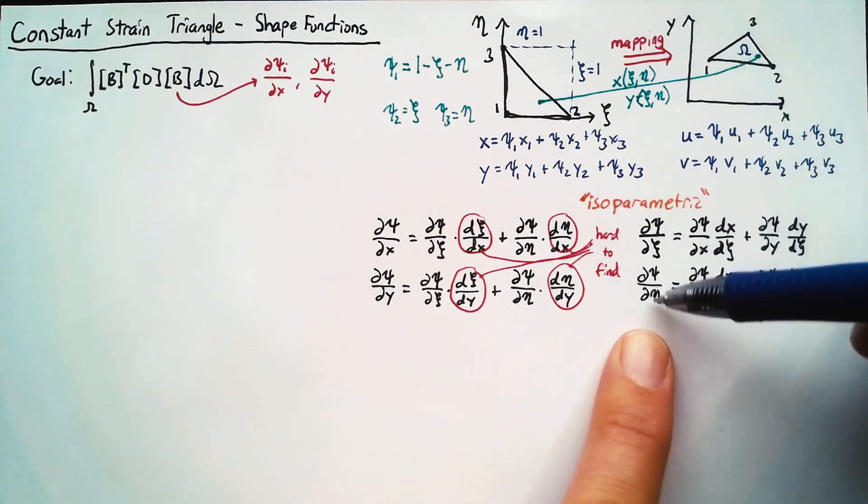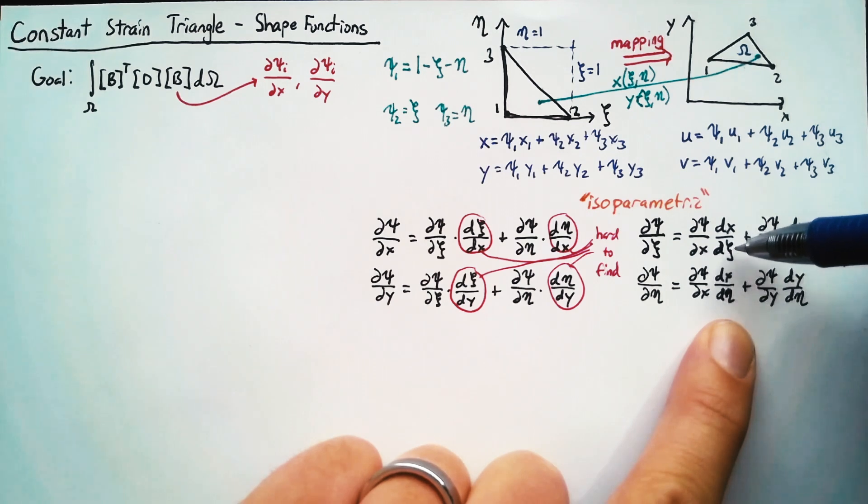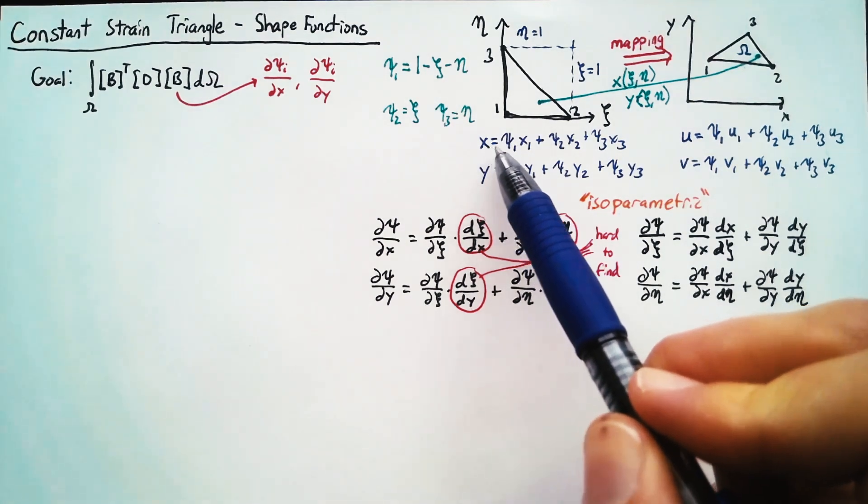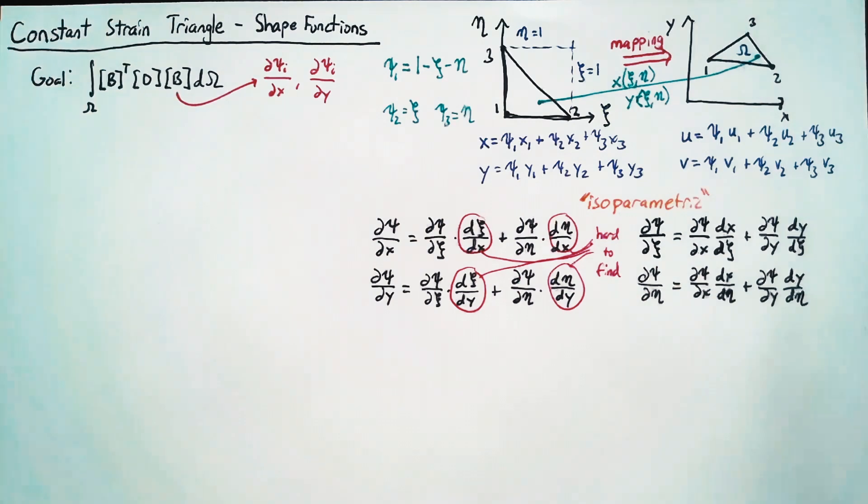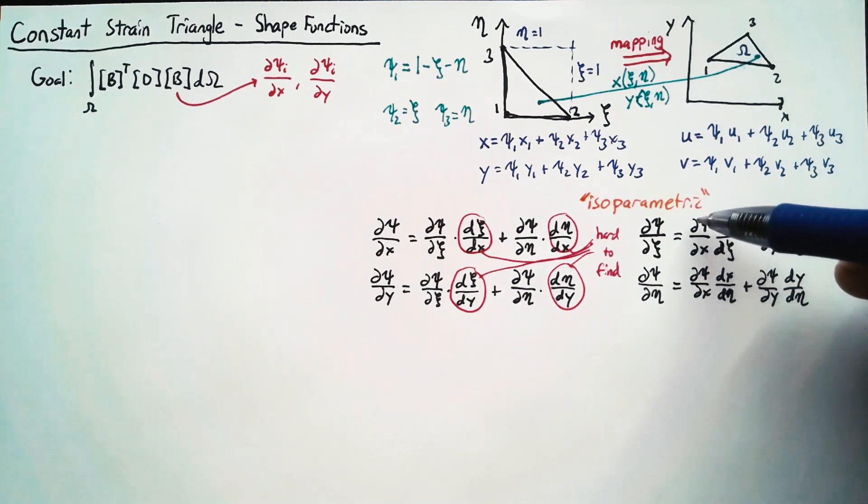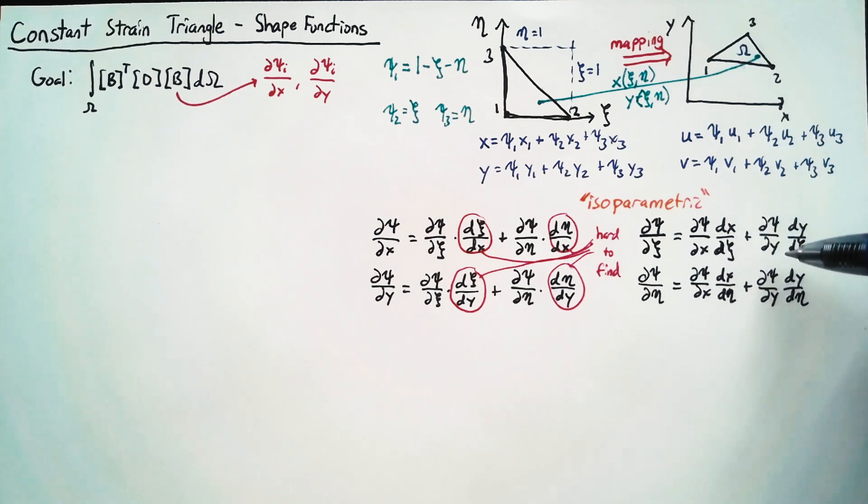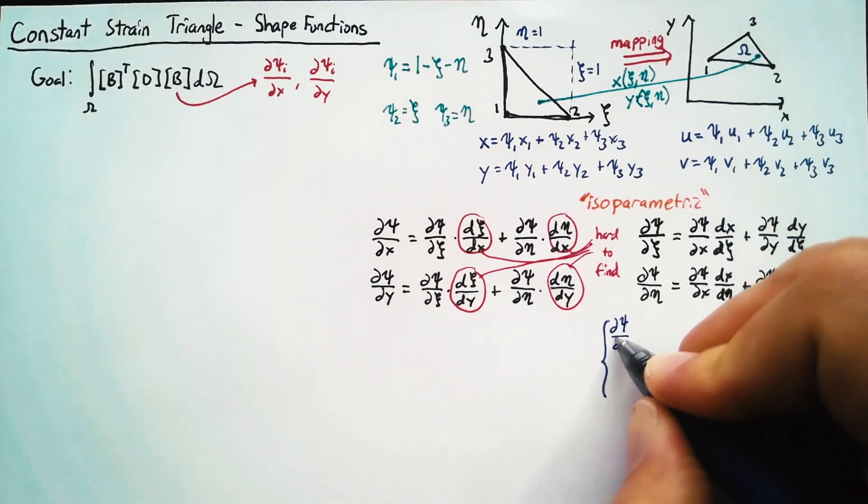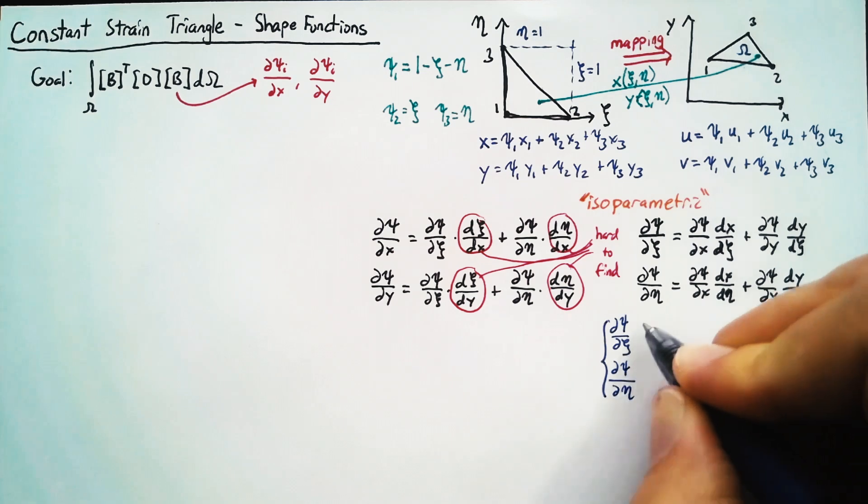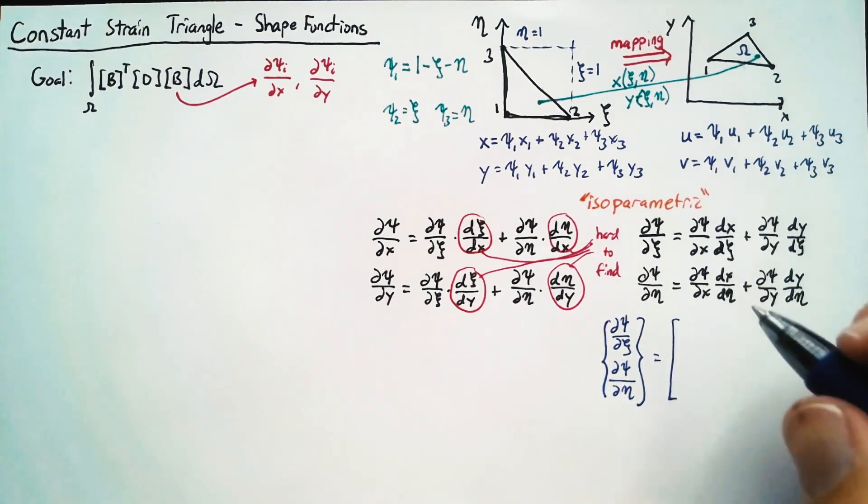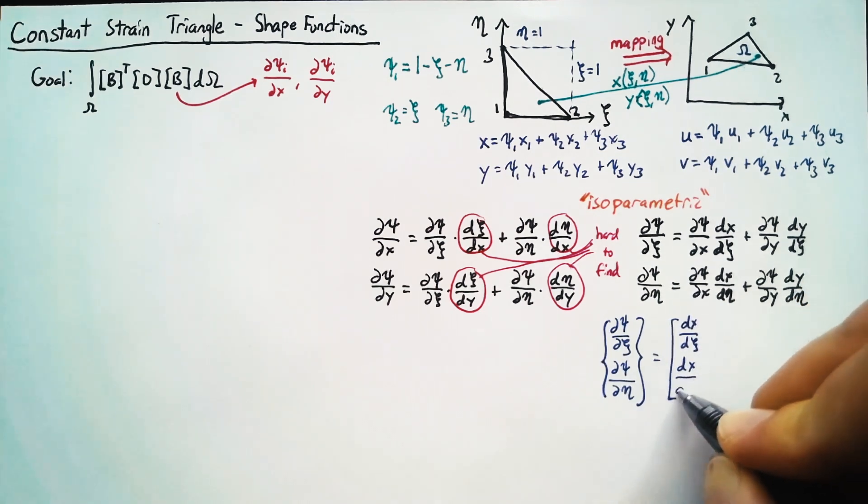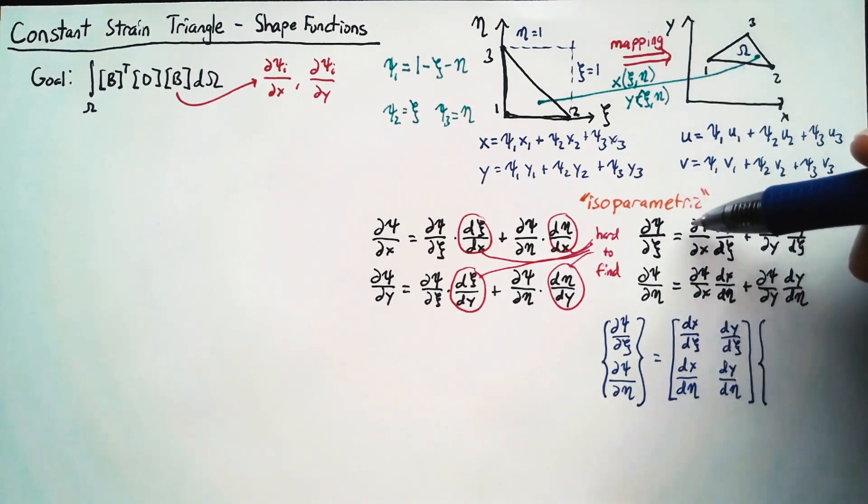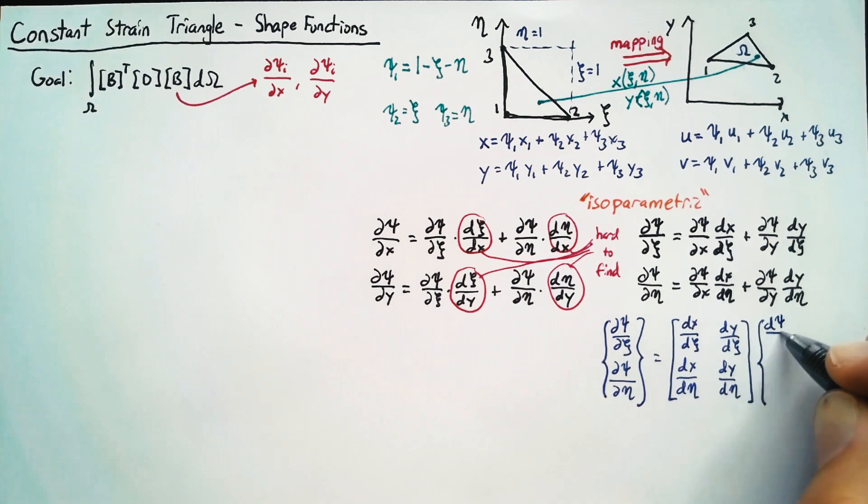So now these values are trivial. We can find dx/dC and dx/deta without too much trouble, because whenever we take a derivative of those, we just take derivatives of our shape functions, which, like we said, was trivial. And we can then solve for dPsi/dx and dPsi/dy using matrix inversion. We write this as a vector dPsi/dC, dPsi/deta, which is equal to a matrix of our dx/dC and similar terms. And that's going to be multiplied by the dPsi/dx and dPsi/dy that we're looking for.